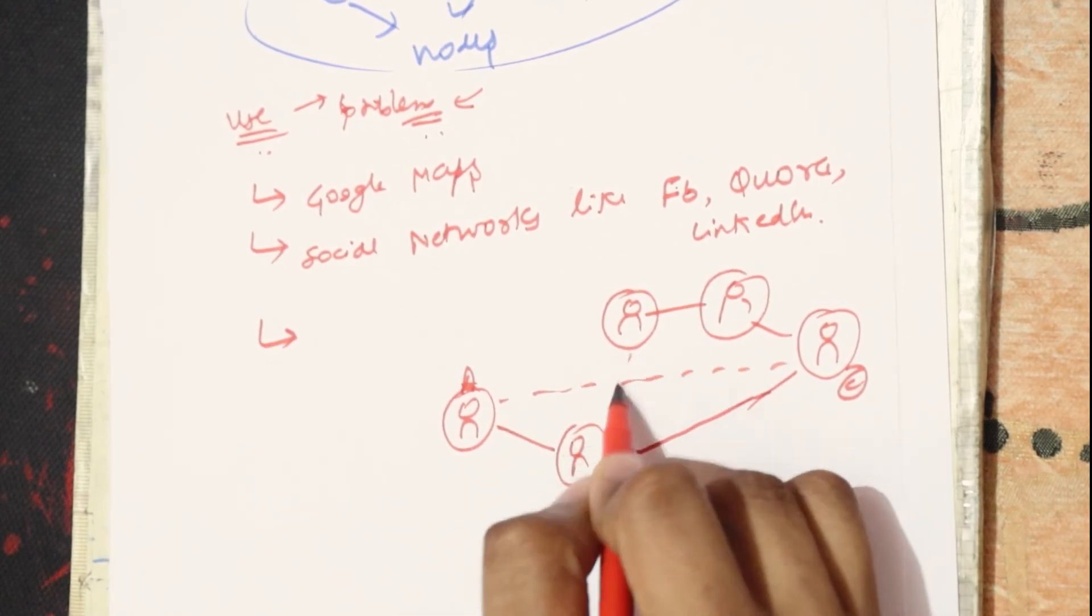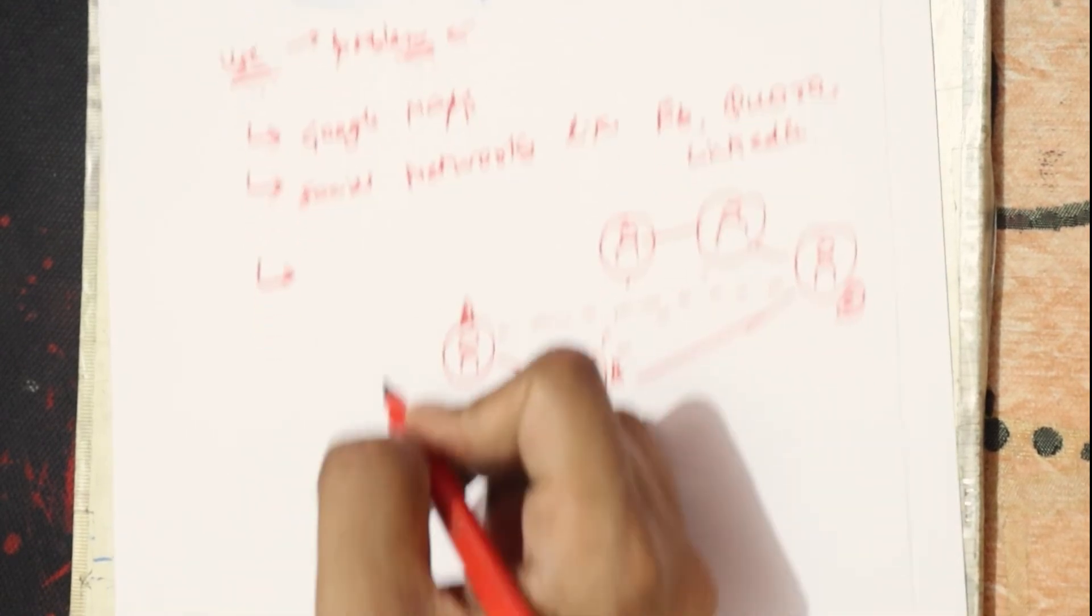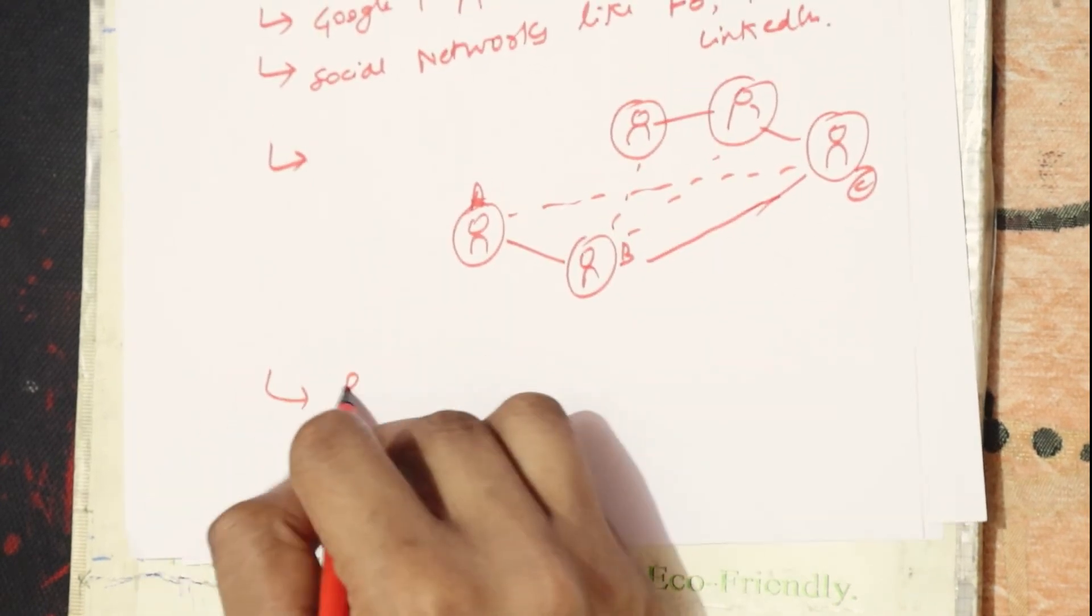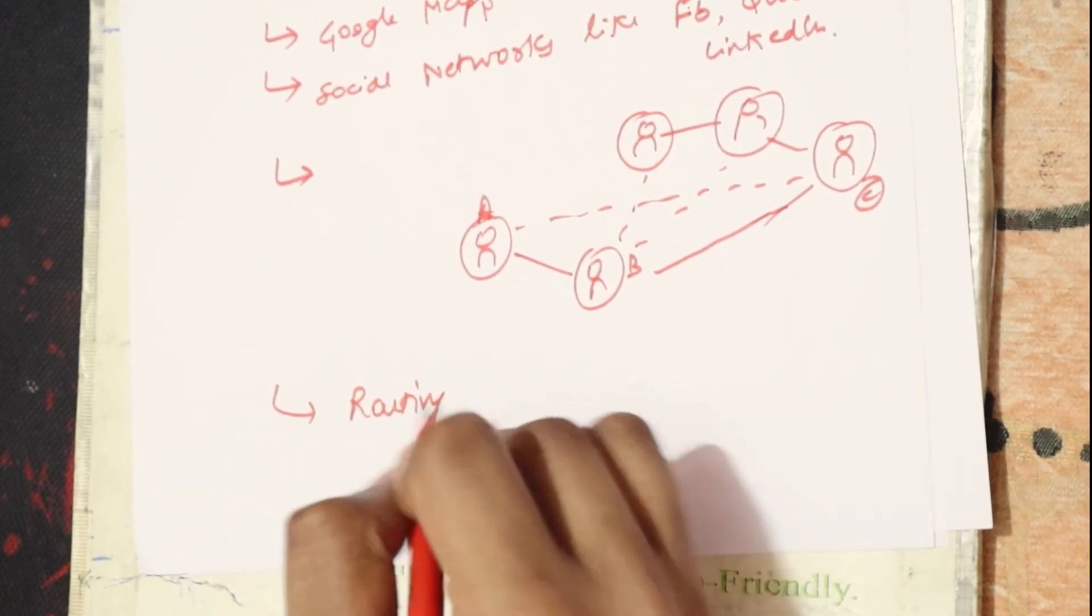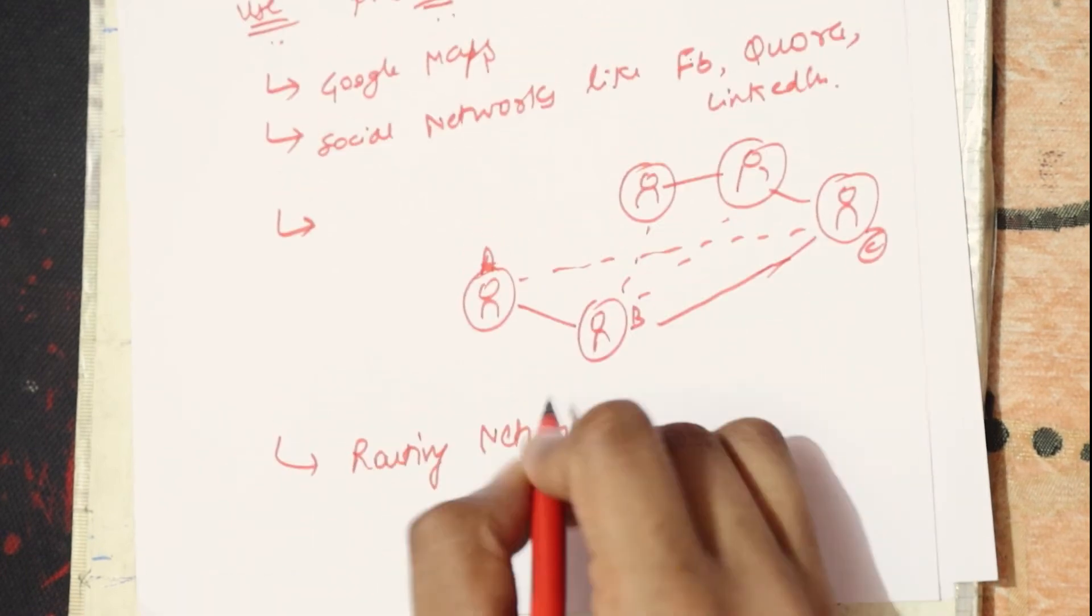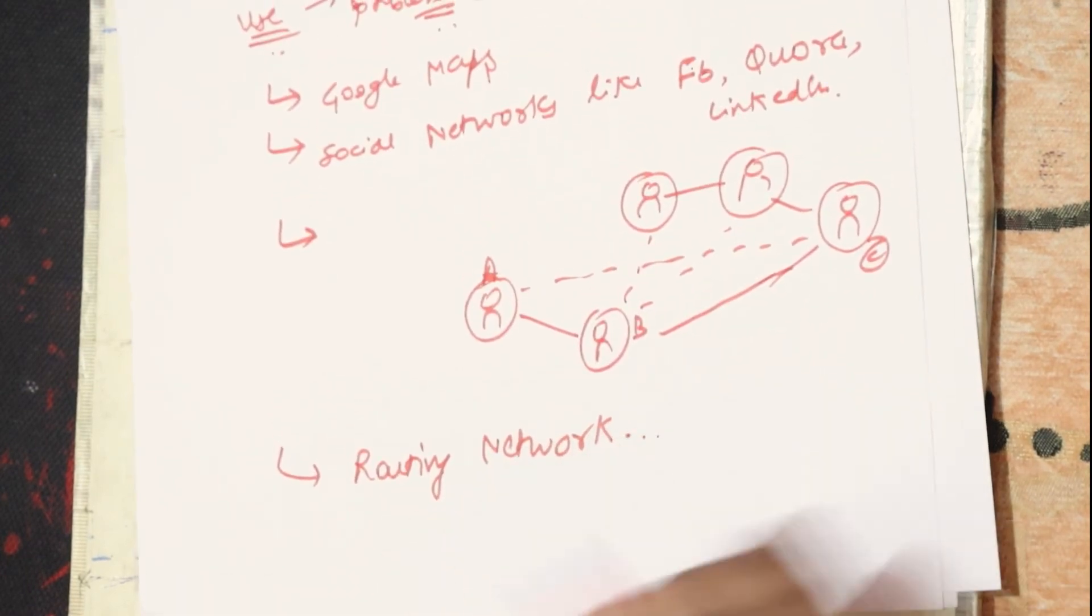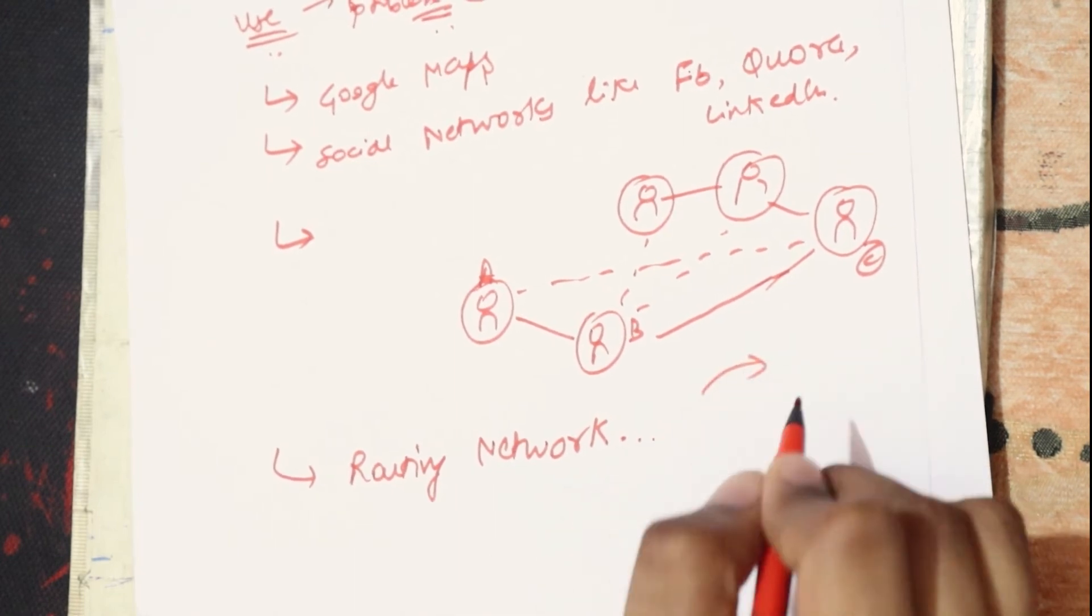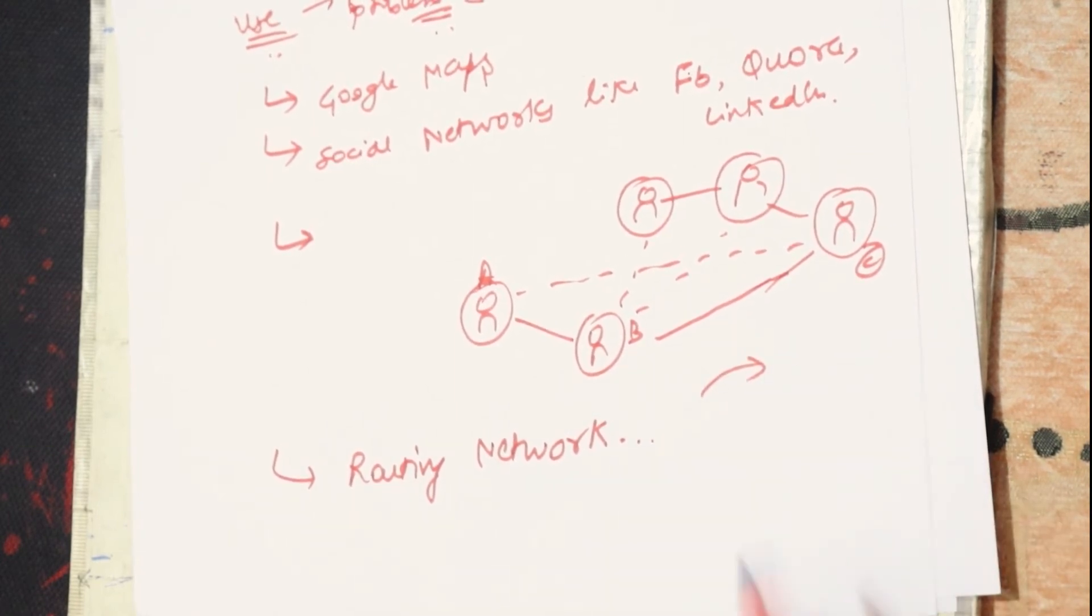These kinds of relations are only possible because of graphs. Next is routing networks - all the routing things happening in networks are basically only possible because of graphs.